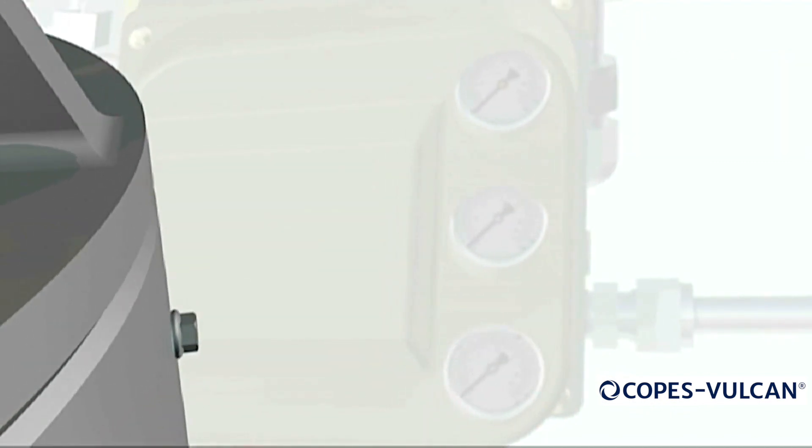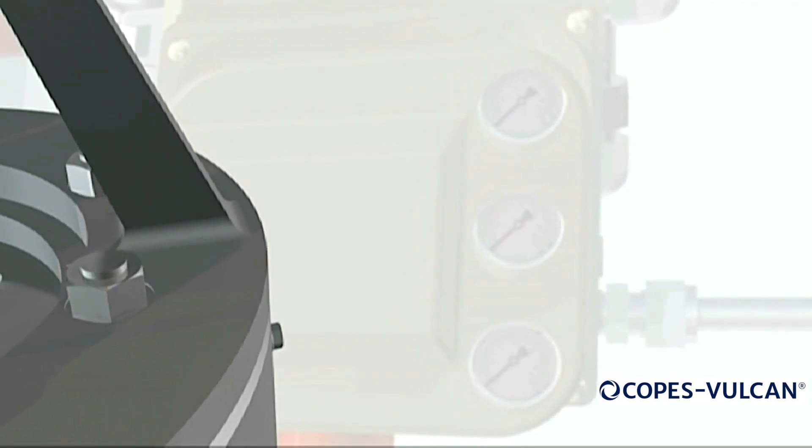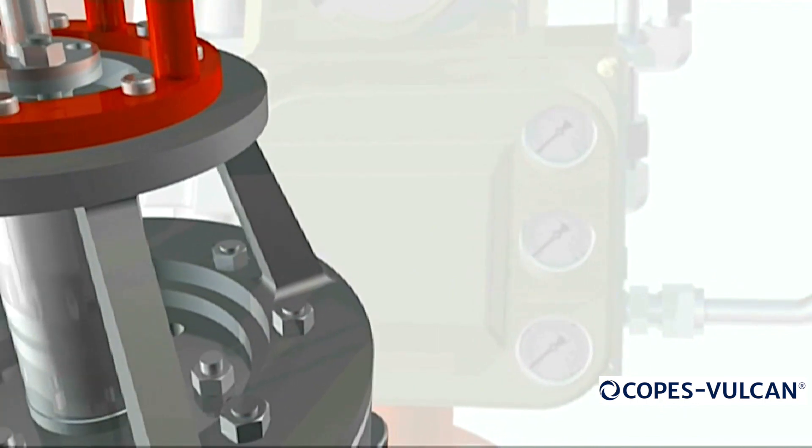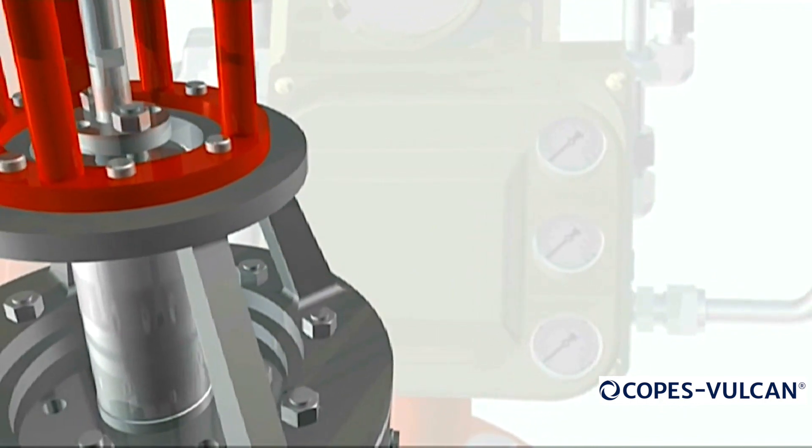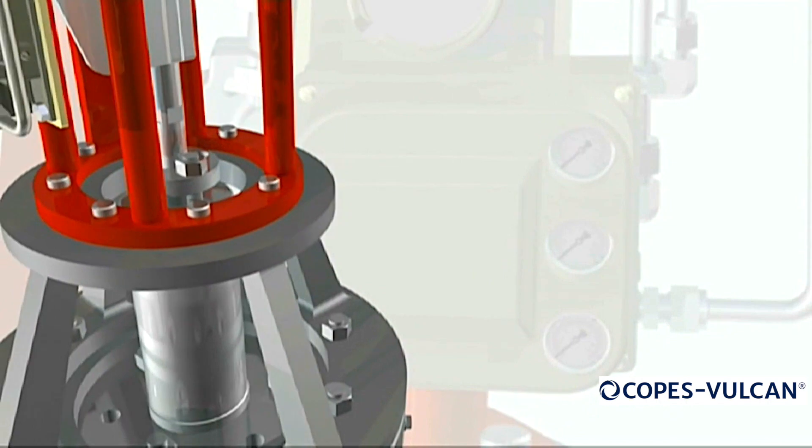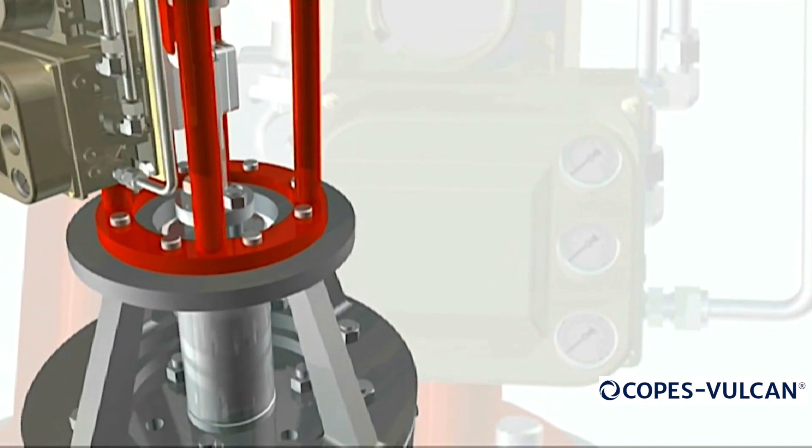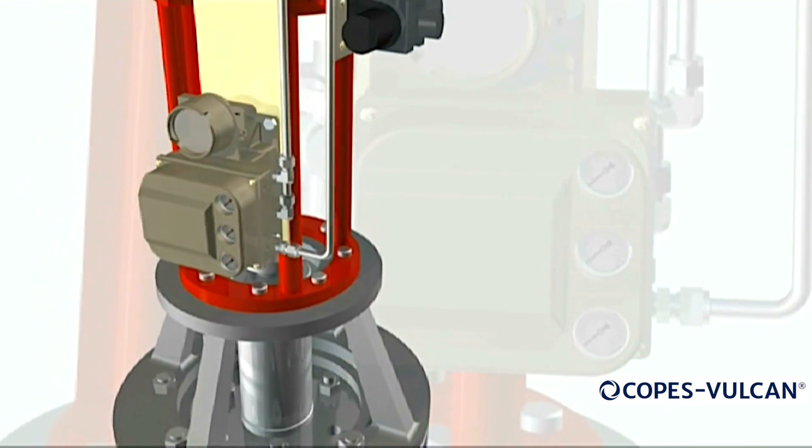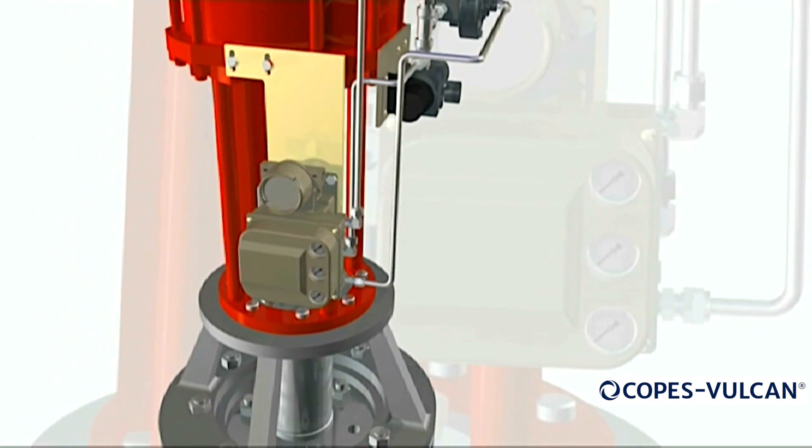Steam turbine bypass systems must be able to react and modulate very quickly under emergency conditions, such as a turbine trip. Stroking speeds of less than one second may be required. The DSCVSA can be supplied with either pneumatic or hydraulic actuation to meet this critical requirement.